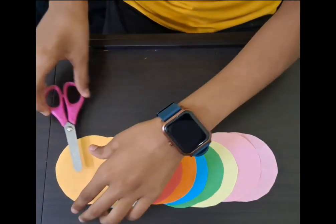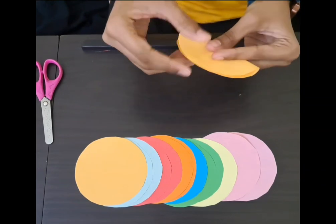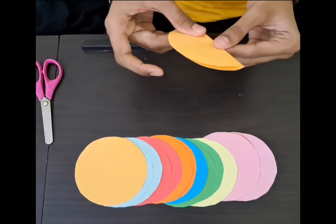These are the various color circles I have made. Now take one circle, fold it into exact half. Make sure the line is clear.